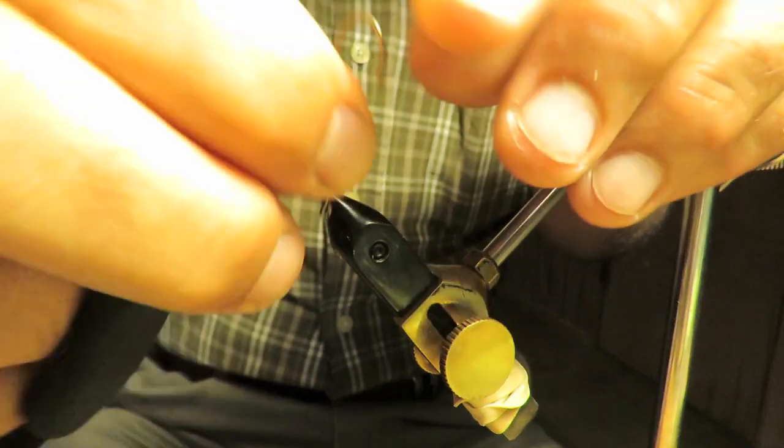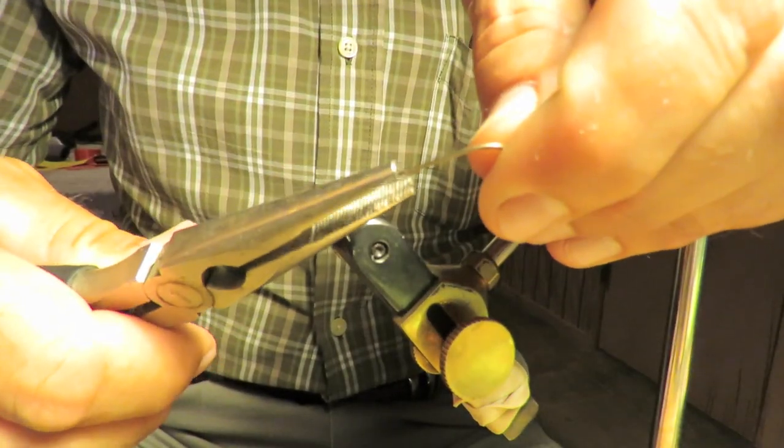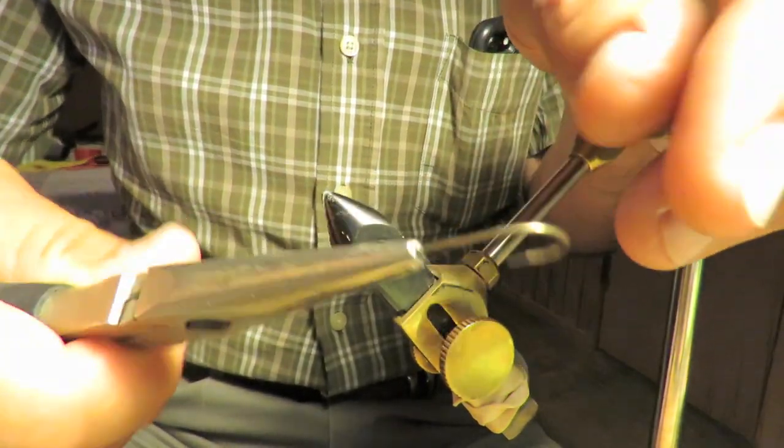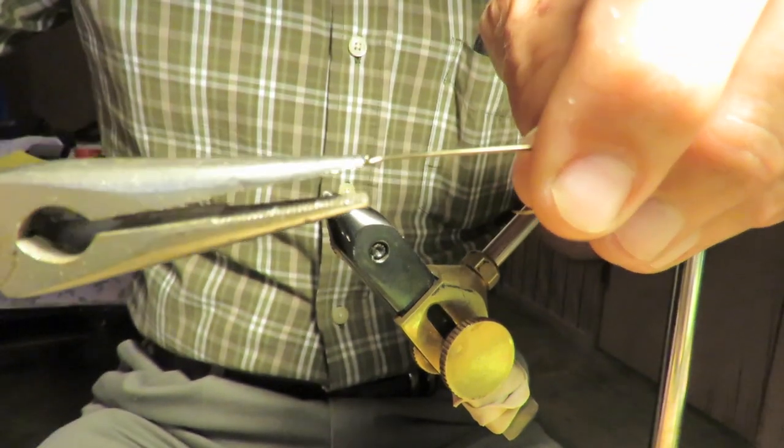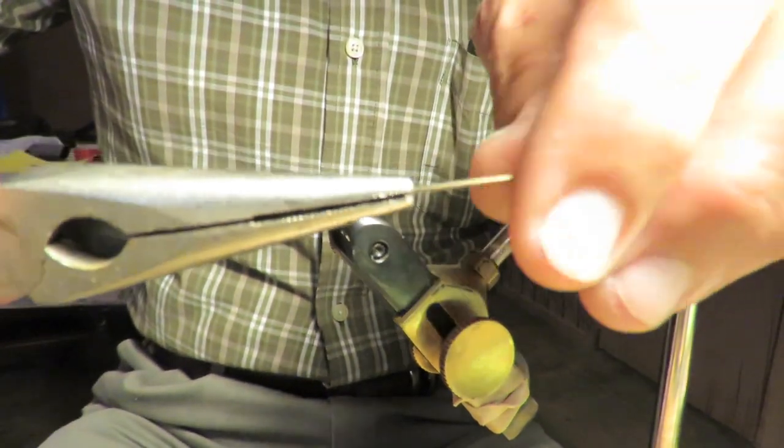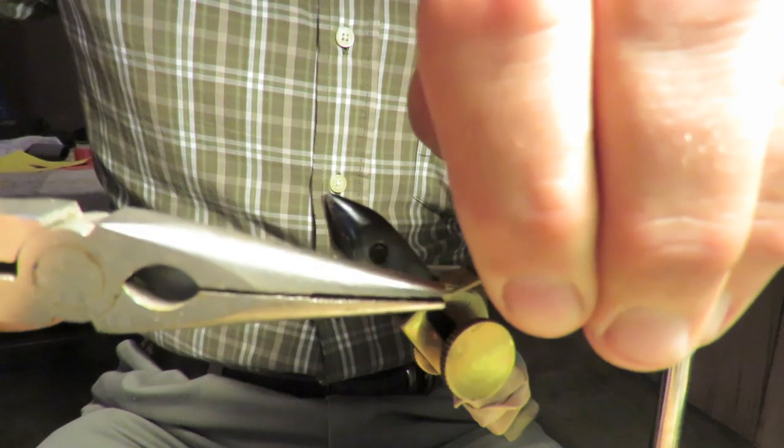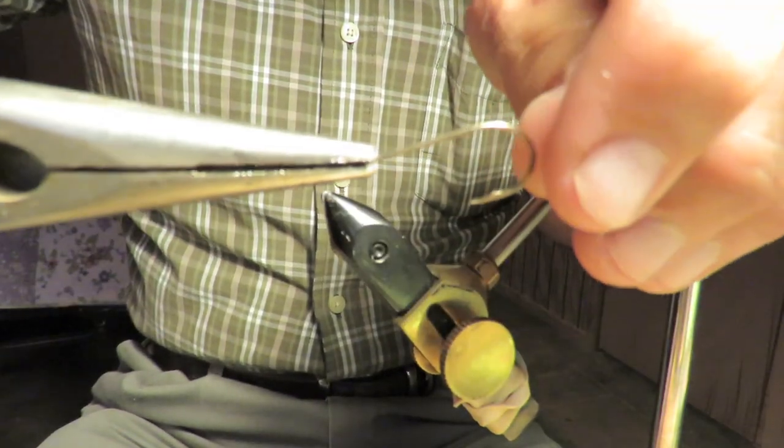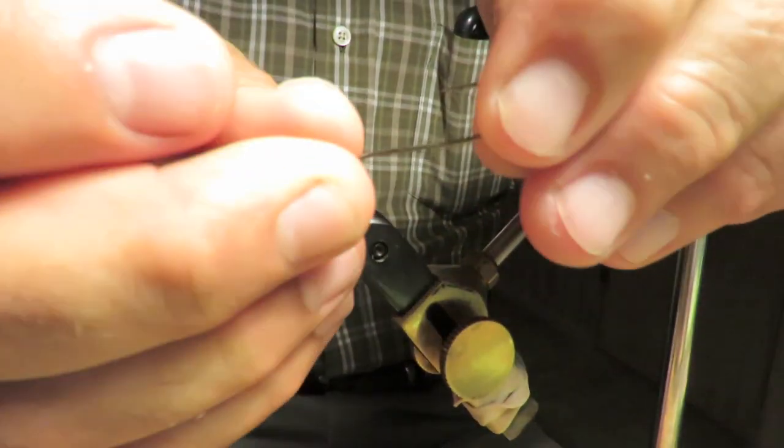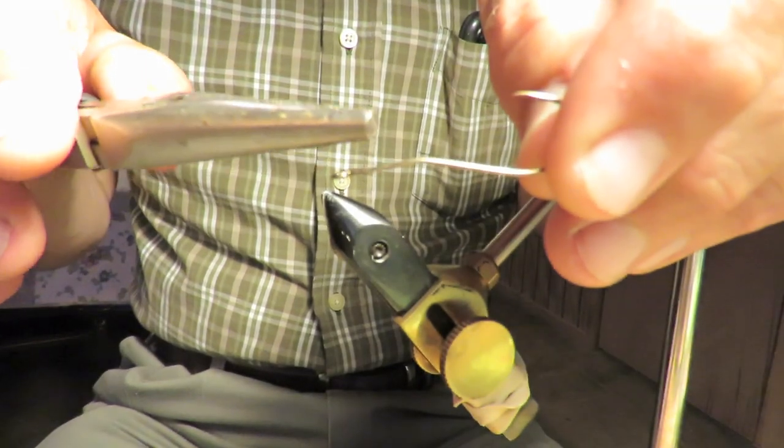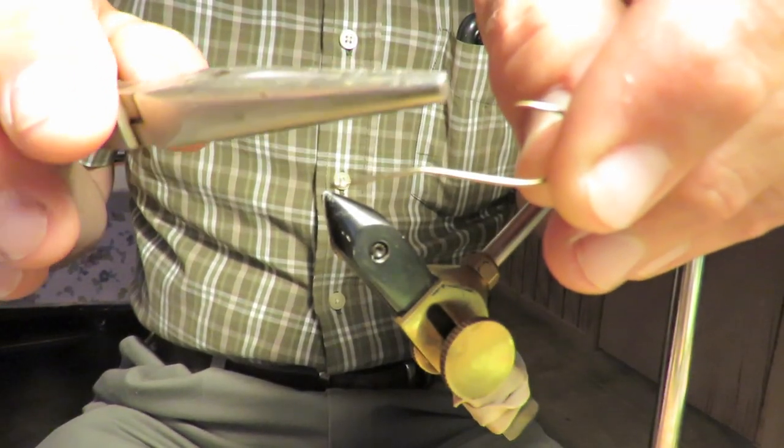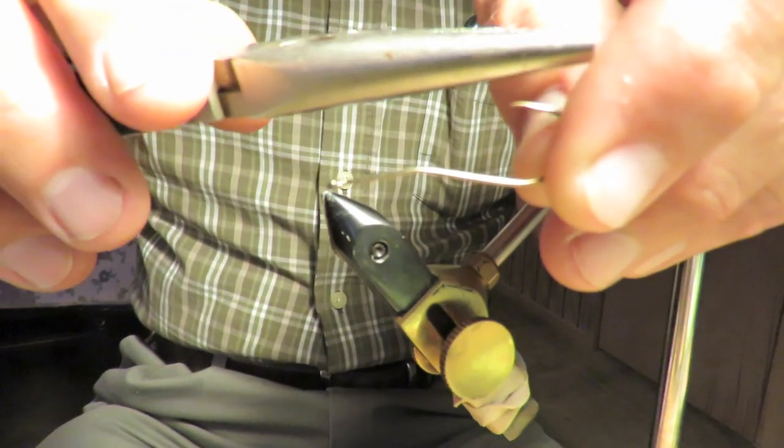Alright, now this bend back is intended to run hook up. I want to take about half the distance, just a little less than half the distance, and bend it like this. That puts the body of the fly, it's gonna be built on top of this hook, so that everything goes over this part here.